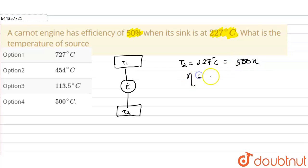And the efficiency of this Carnot engine is 50 percent, that is 0.5. Now as we know that the efficiency of Carnot engine is given as 1 minus temperature of the sink upon temperature of the source.